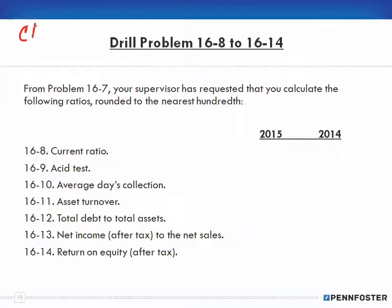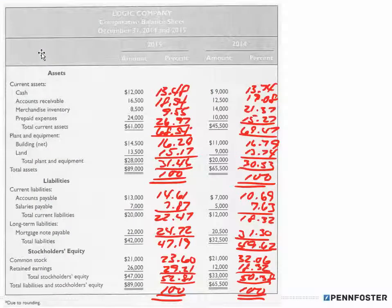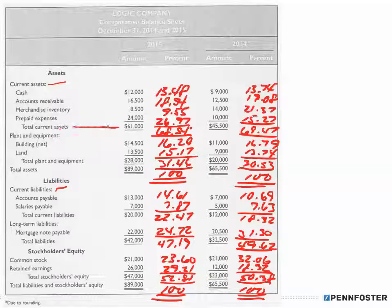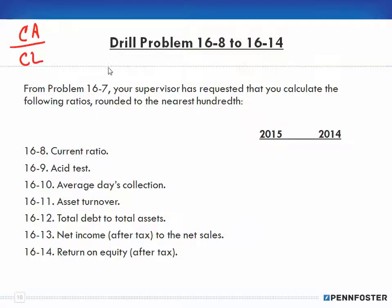For the current ratio, the formula is current assets over current liabilities. When we go up to where our assets and liabilities are on the balance sheet, the way this balance sheet is formatted it provides us with our current assets and our current liabilities. There's the number right there — current assets 61,000 and current liabilities 20,000.